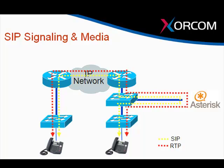SIP signaling and media — as we were talking about earlier, the SIP signaling always goes through Asterisk from the endpoint. So here we have a telephone call, and the first thing that happened was this phone sent a control message saying, hey, I want to talk to an internal extension.